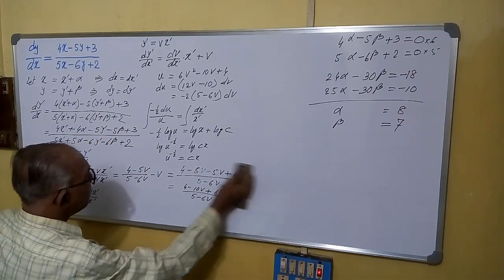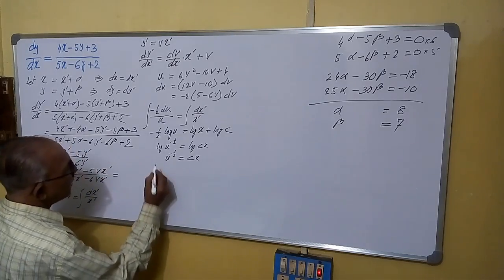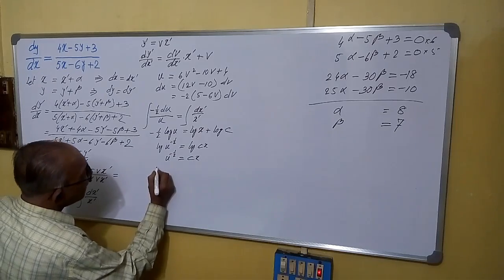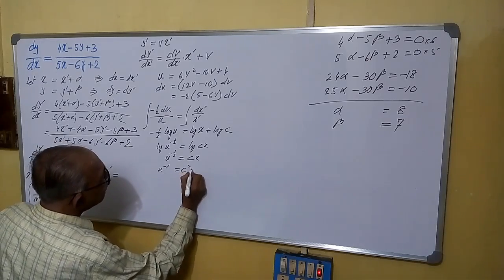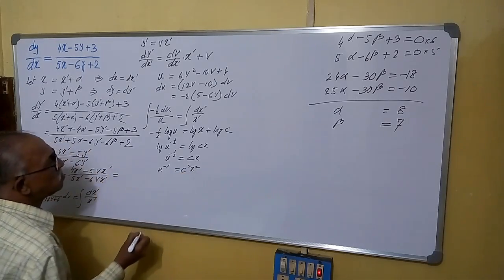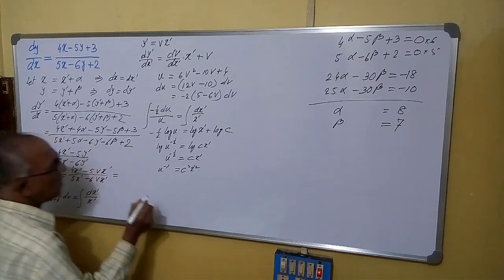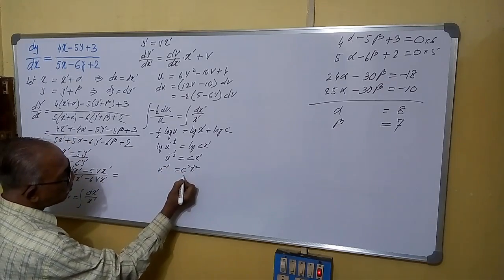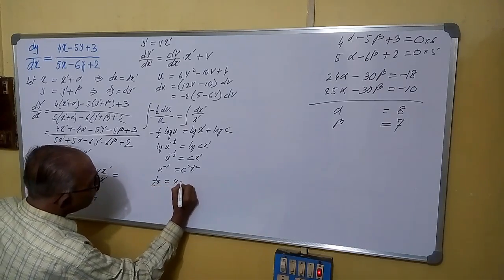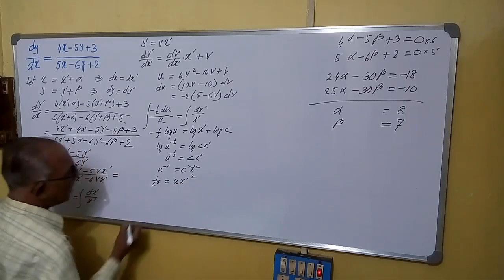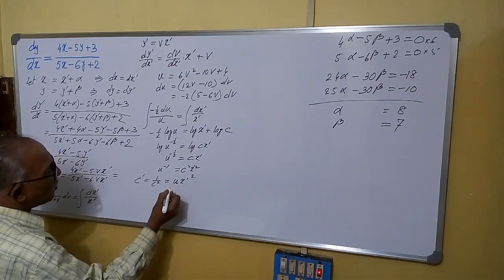So log u to the power minus half equals log cx dash, meaning u to the power minus half equals cx dash. Squaring both sides, u to the power minus 1 equals c squared x dash squared. Therefore 1 by u equals c squared x dash squared, and since 1 by c squared is also a constant, we write c dash equals u times x dash squared.